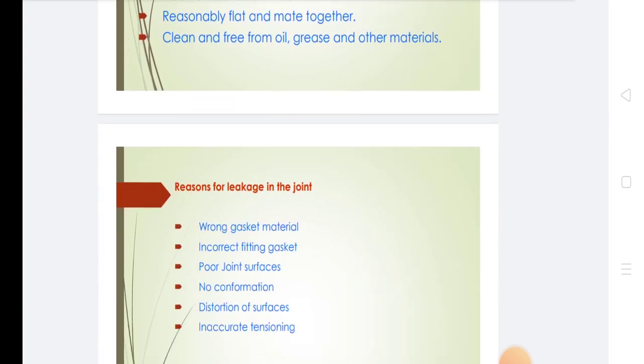Reasons for leakage in joints: wrong gasket material, incorrectly fitted gasket, poor joint surface, no conformation, distortion of surface, and inaccurate tensioning.